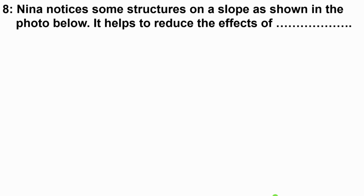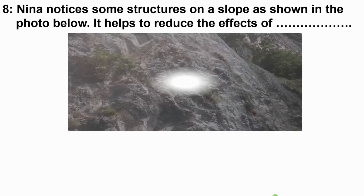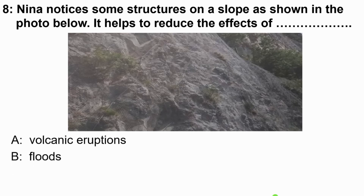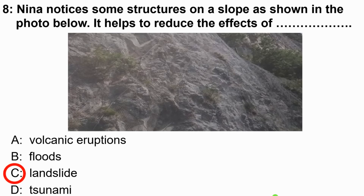Question 8: Nina notices some structures on a slope as shown in the photo below. This helps to reduce the effect of dash. Options are A, volcanic eruption; B, flood; C, landslide; or D, tsunami. On the picture there is a metal mesh, and a metal mesh is installed on the hill to help prevent landslides. So this helps to reduce the effect of landslides.